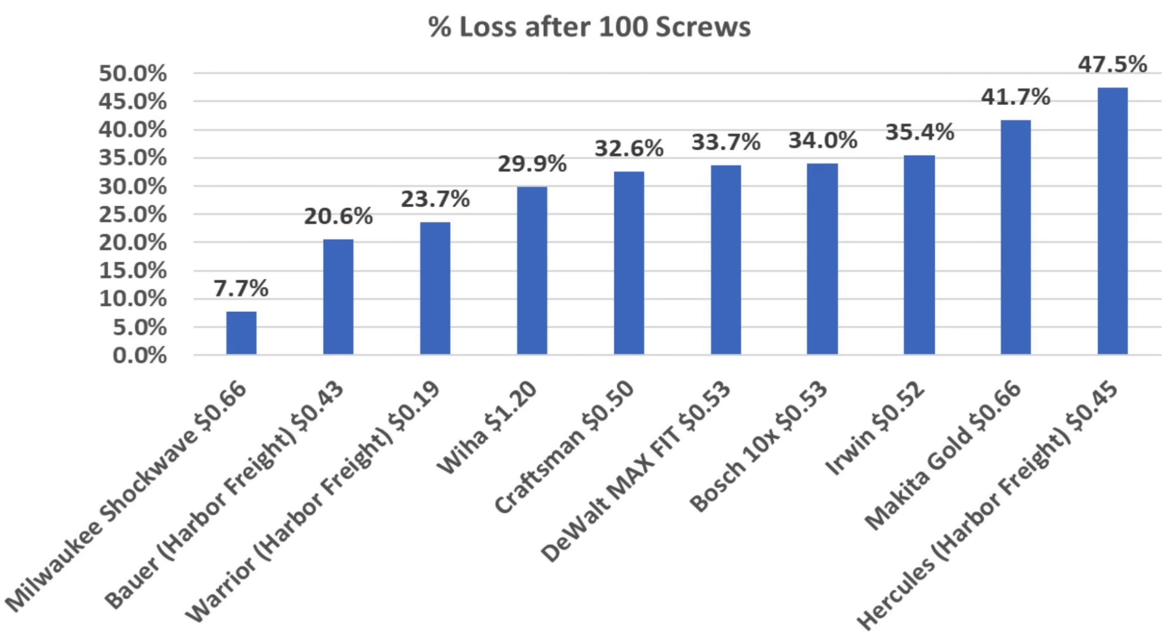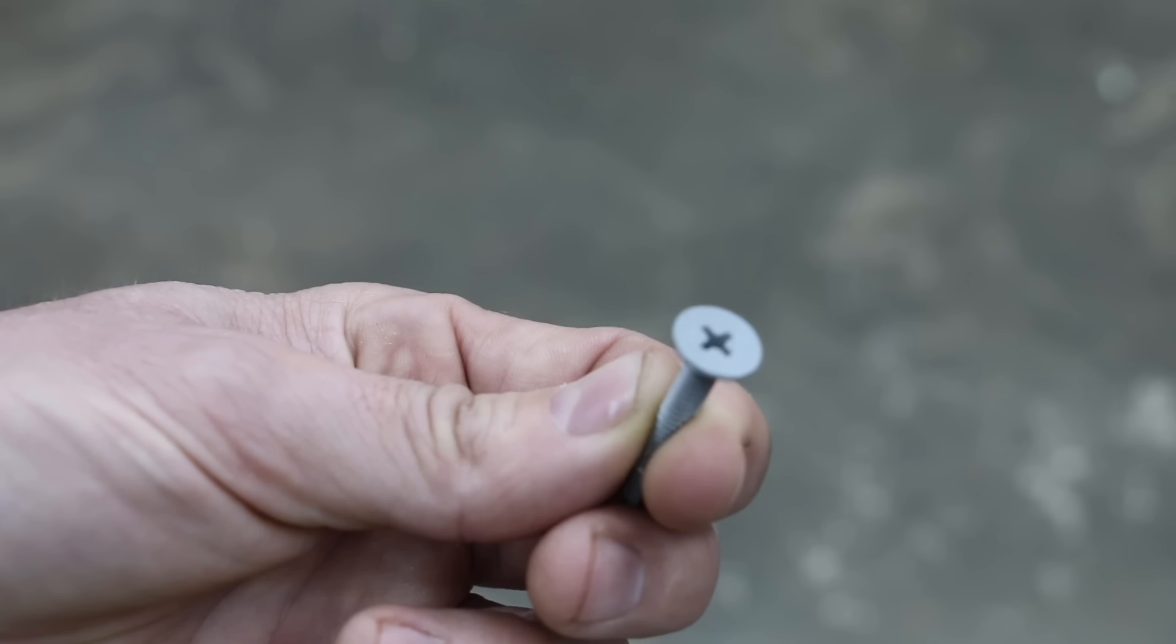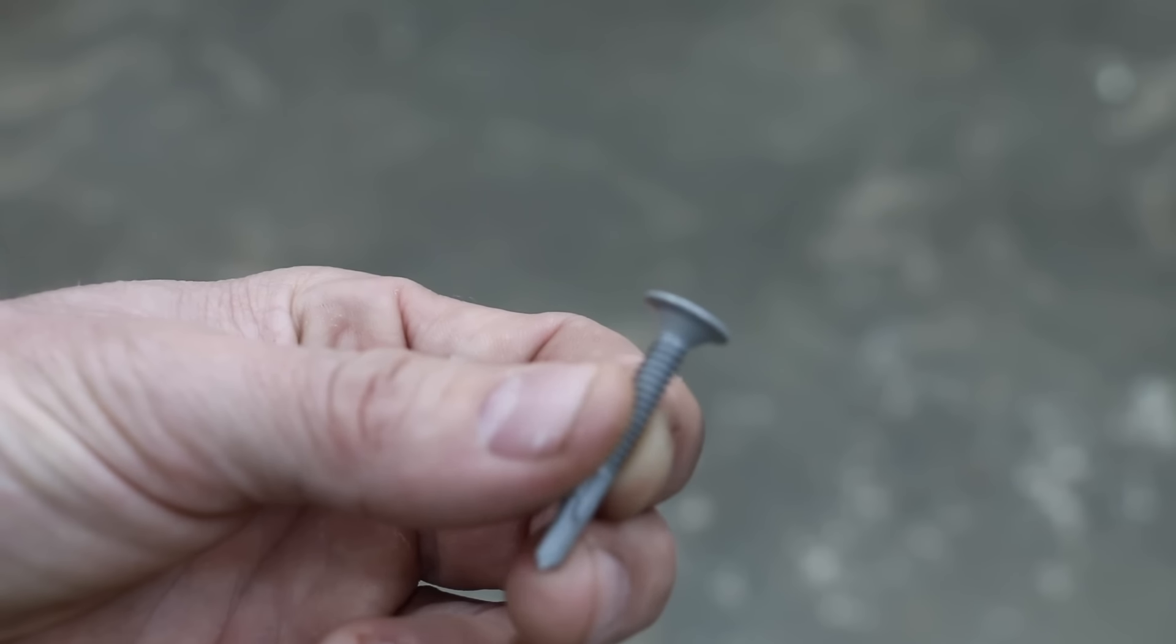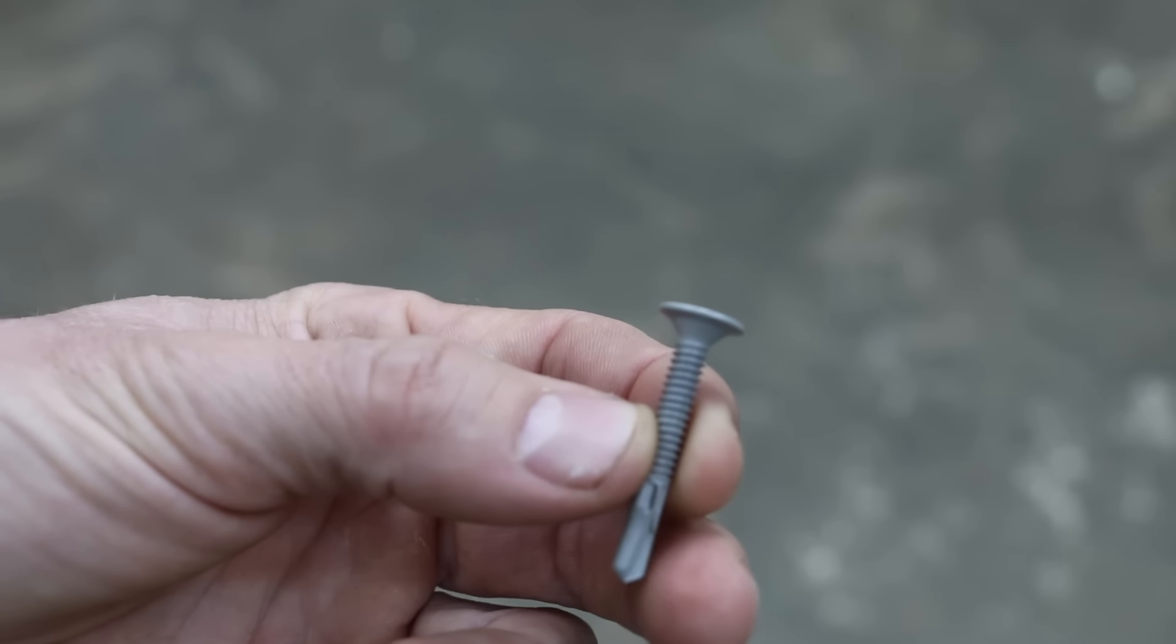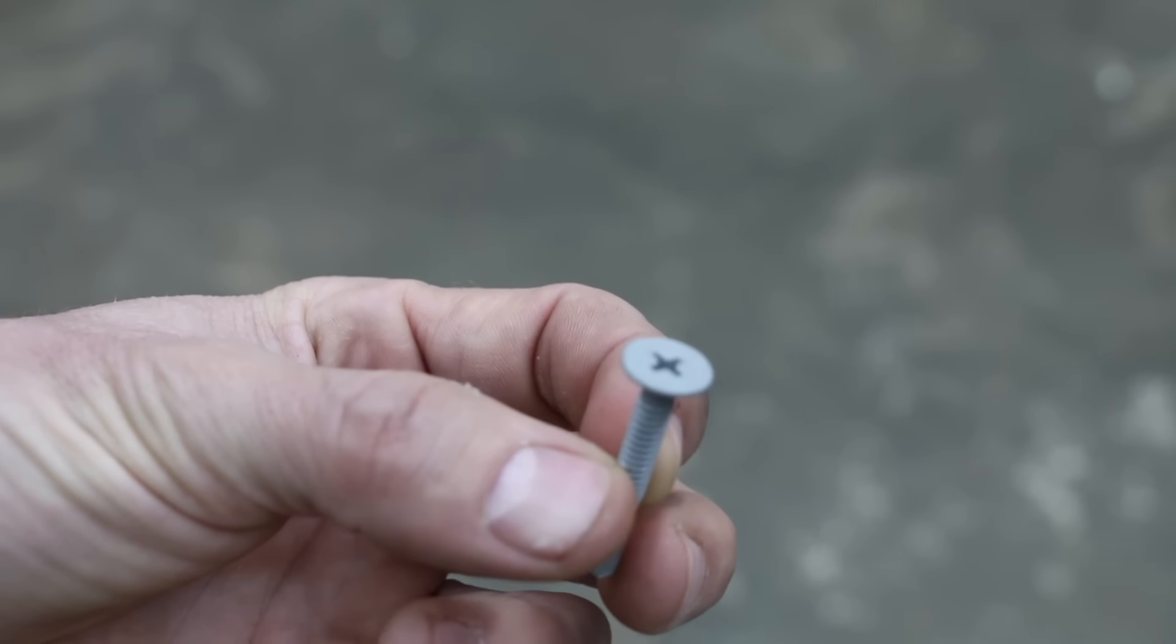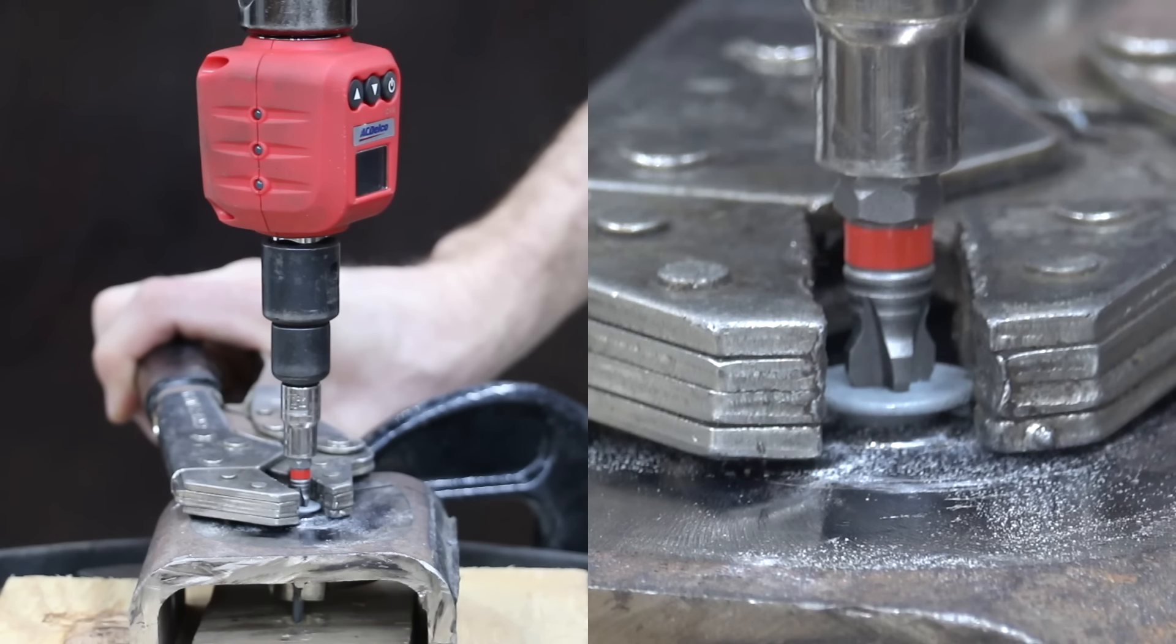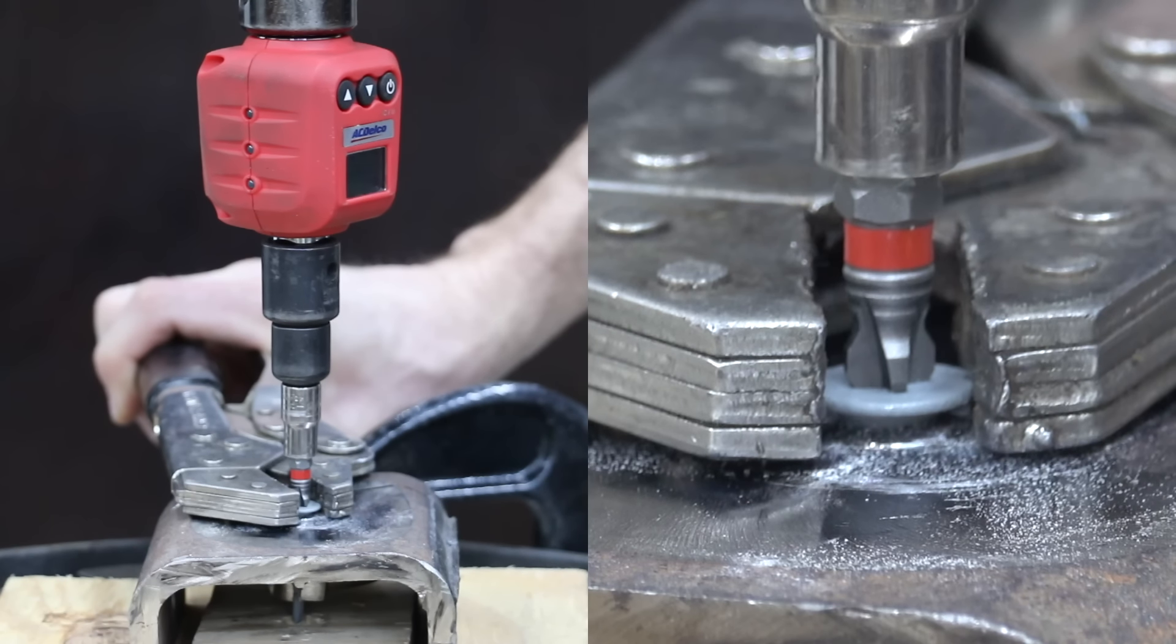But the next test will provide some great information on the strongest driver bit for high-torque applications. I used some self-tapping steel screws for this next test along with 200 pounds of downward force to prevent the driver bits from camming out before snapping. We won't test the Harbor Freight Warrior again since it snapped at 93 inch-pounds in the previous test.